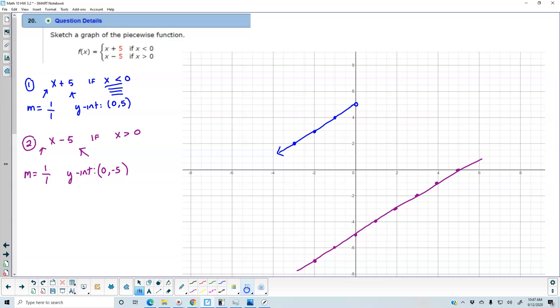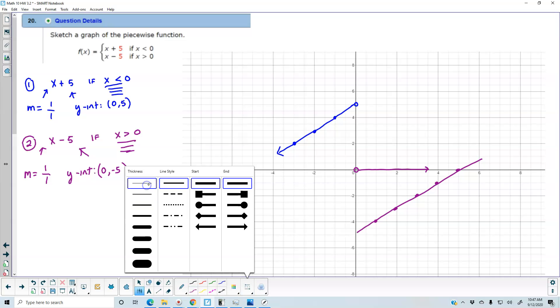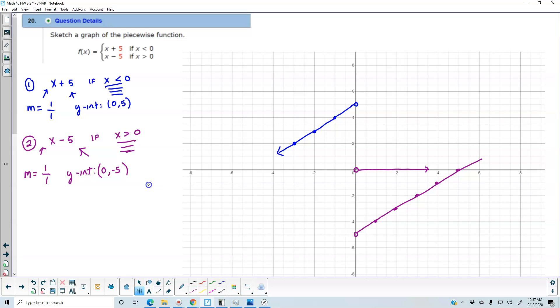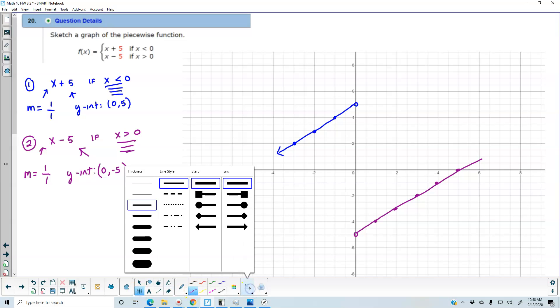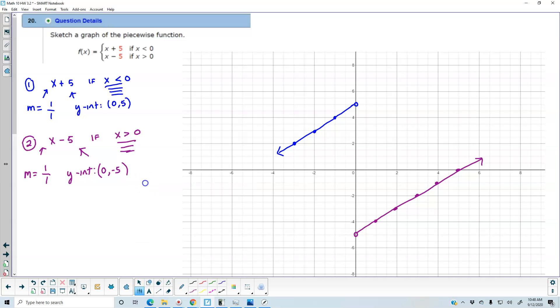And so now we need to look at this restriction. So the restriction tells us that it has to start at 0, and it's going to be greater than 0. So what does that mean? That means we need to cut off everything that's less than 0. And we need to put an open circle at that number as well because it's greater than, not greater than or equal to. And so therefore, there is our other piece function.